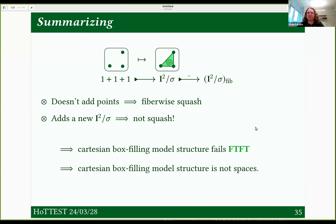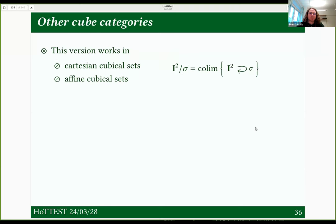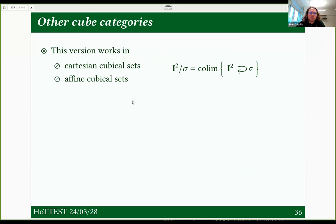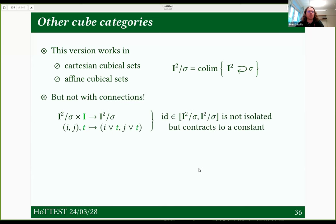I was looking at Cartesian cubical sets, and this version of the argument — looking at this weird triangle — works with Cartesian cubical sets and also with affine cubical sets: if you take out the diagonal, it didn't come up at all and doesn't matter. But it doesn't work with connections. If you have a cube category with connections, this argument stops working — essentially, the identity map in the mapping space from the weird triangle to itself isn't isolated anymore; it's in fact homotopic to a constant map.